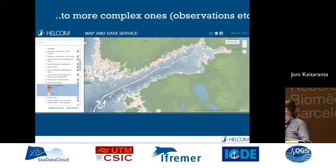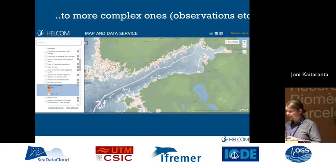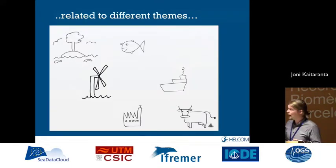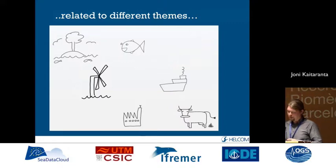We also have much more complex data products, which can contain, for example, observations or analyses that have joined different datasets. One example is physical disturbance to the seabed, where we have combined datasets on dredging activities and other human activities that have an effect on the seabed. As already mentioned, we cover quite a lot of different themes — there are datasets related to oceanographic data, biological datasets, and also many datasets related to human activities and inputs of contaminants and nutrients into the sea. So there is quite a big variety of different datasets.